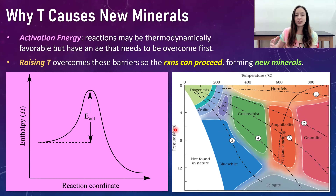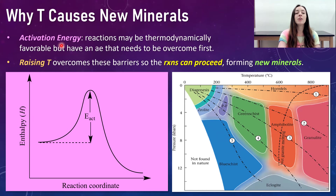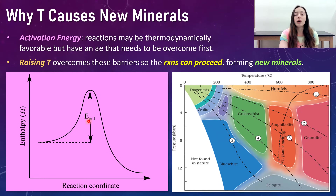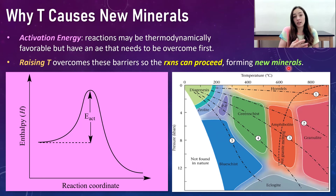Before we jump into those other mineralogical transitions, let me explain why temperature and pressure cause new minerals to form. In thermodynamics, there is a thing called activation energy, where reactions may be thermodynamically favorable — the energy of the reactants is greater than that of the products — but there is often an energy hump to overcome before the reactants can become the products. Raising temperature and/or pressure can provide enough energy to overcome these activation energy barriers, allowing reactions to proceed and new minerals to form.